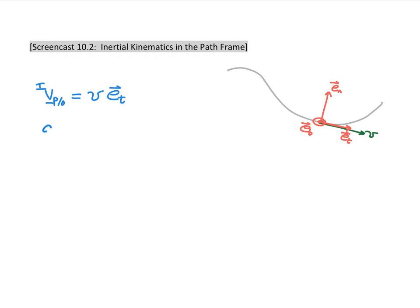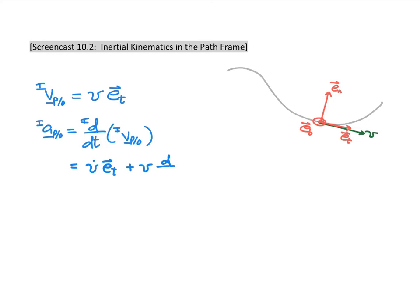Now for our acceleration, we differentiate our velocity as observed in the inertial reference frame. Using the product rule on the first term in the E_T direction, we get V-dot in the E_T direction, plus the speed multiplied by the time differentiation of our basis vector E_T.